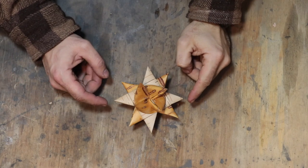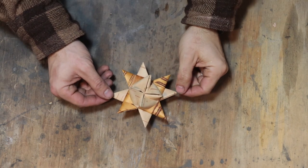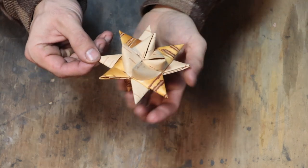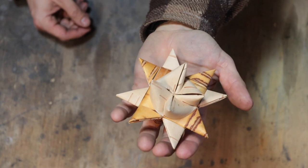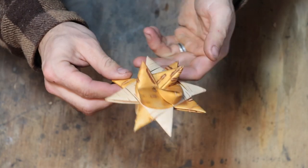We are going to make some birchbark star decorations. You might have made these before from paper, they're quite a common classroom activity, but using birchbark makes them look especially beautiful.